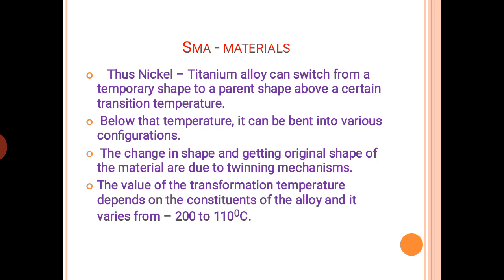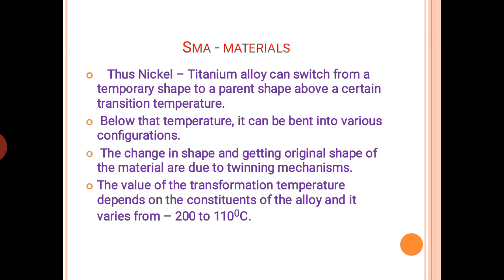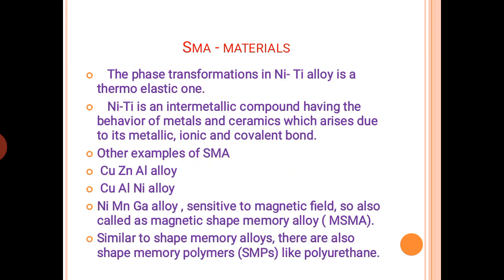The NiTi alloy can switch from a temporary shape to its parent shape above a certain temperature; below that temperature it can bend into various configurations. The change in shape and recovery to the original shape are due to the twinning mechanism. This transformation temperature depends on the constituents of the alloy and generally varies from minus 200 to 110 degrees Celsius. The phase transformation in NiTi alloy is a thermoelastic one. NiTi is an intermetallic compound having the behavior of both metals and ceramics, which arises due to its metallic, ionic, and covalent bonds.